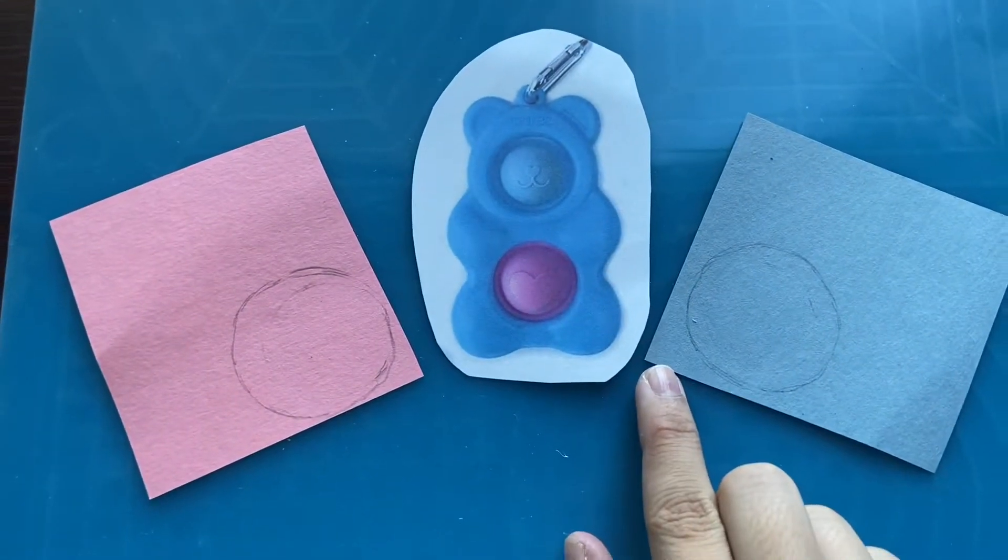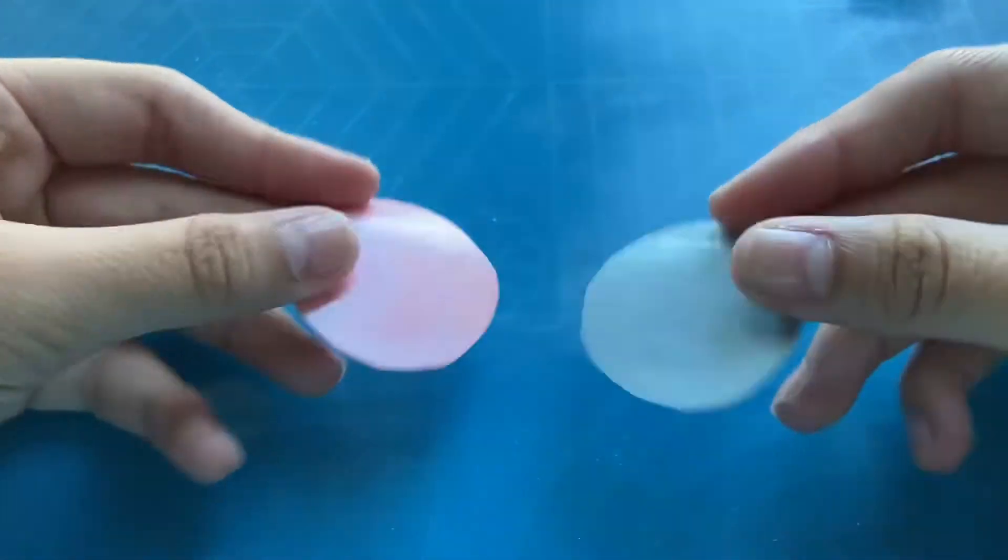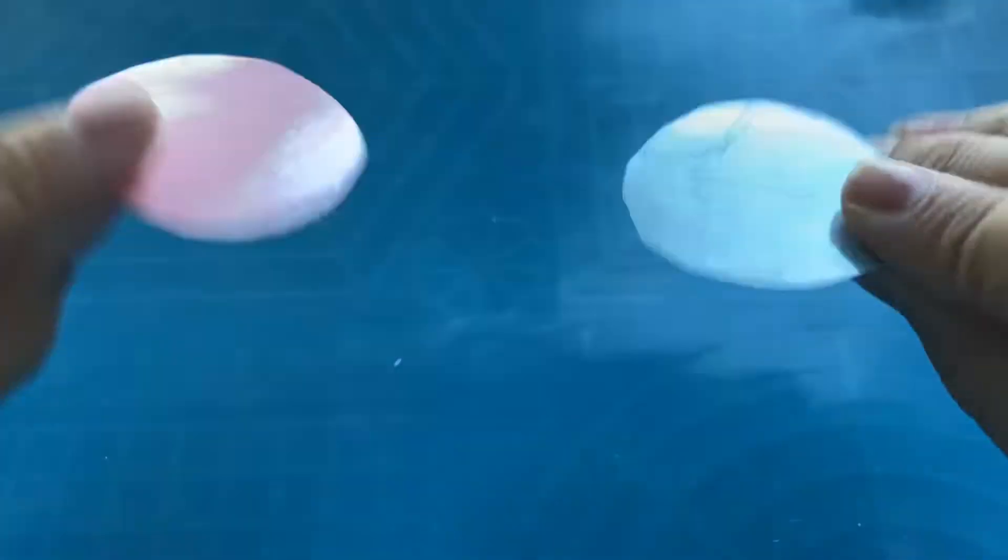Next you're going to want to cover them in tape and cut the circles out. So as you can see, I have cut out both circles and I have taped them both sides, and it is okay if they're not perfect, you can trim them later.